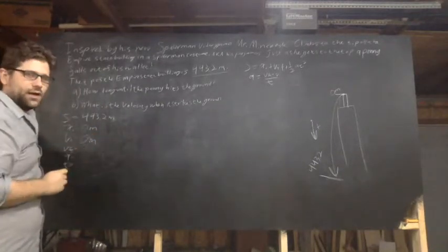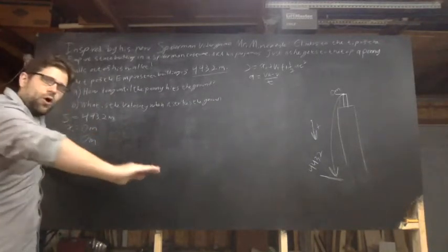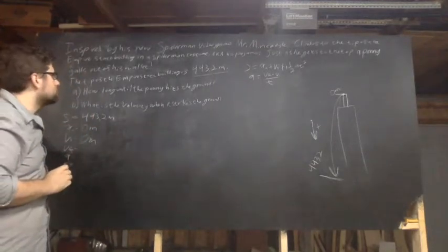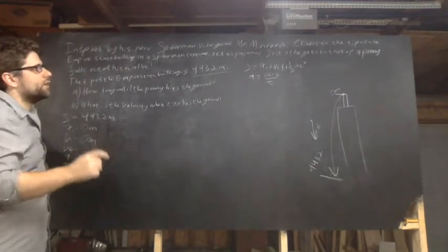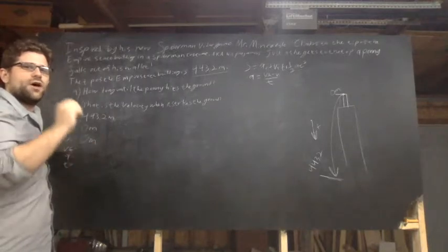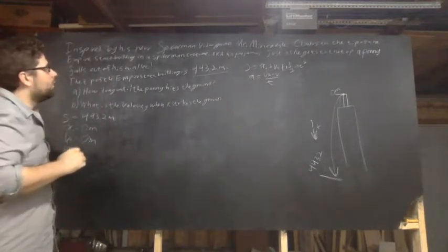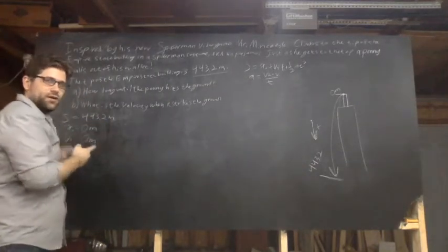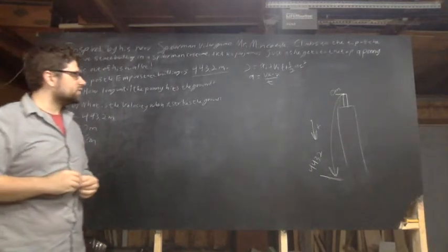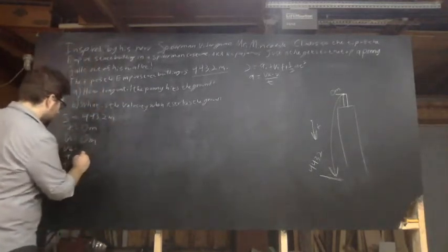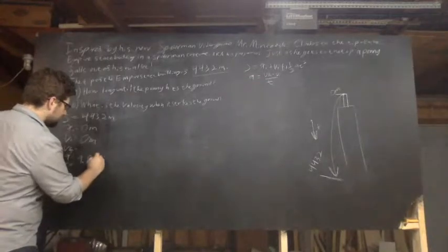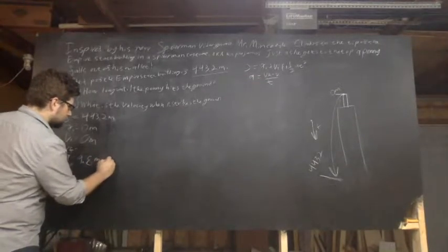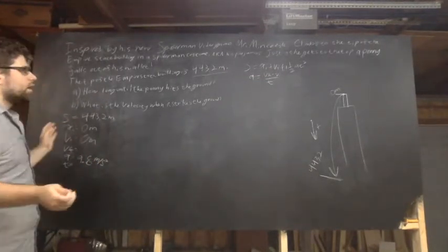And the other thing I know, and this is true in all free fall problems, is I know that my acceleration is due to an outside force of gravity. Now in this, we're on the earth, so gravity on the earth is a constant 9.8 meters per second squared.